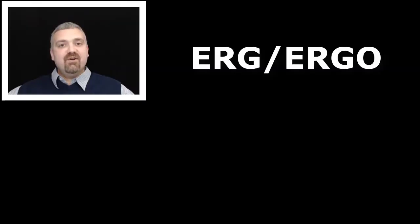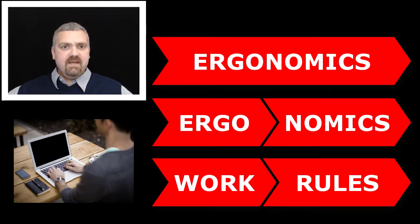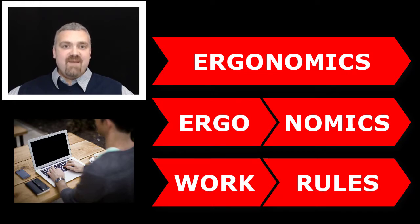First we have 'erg' or 'ergo,' which means work. An example to help that stick: ergonomics. Ergo means work, and 'nomics' means the rule or law of something. So ergonomics kind of means the rules of work — but what the word actually means is the study of, or the science behind, working efficiently.